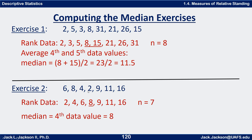For exercise two, putting the data in increasing order gives: 2, 4, 6, 8, 9, 11, 16 — that's seven values, so n is 7. Seven plus one is eight divided by two is four, so the median is the fourth one in the ordered list: one, two, three, four — that's 8. So 8 is the median, with three values below (2, 4, and 6) and three values above (9, 11, and 16). The median is both a measure of central tendency and a measure of relative standing — it ranks so that half the data is below it, and half is above.